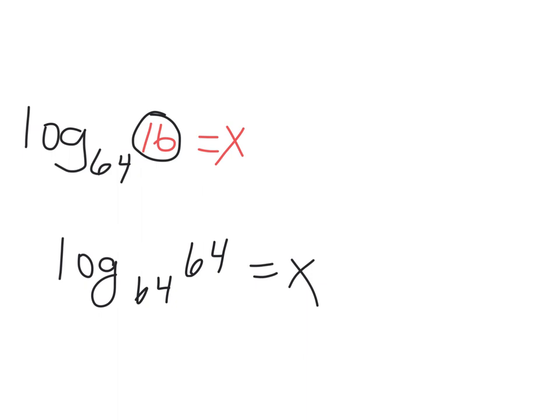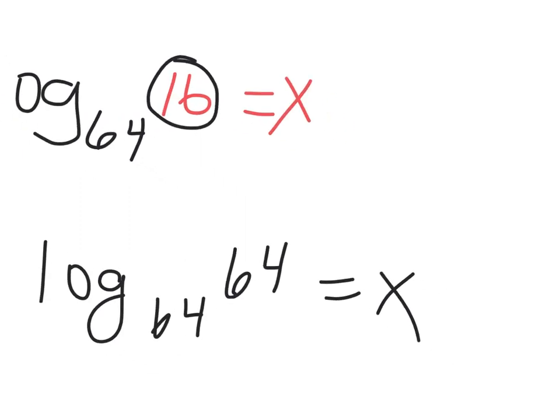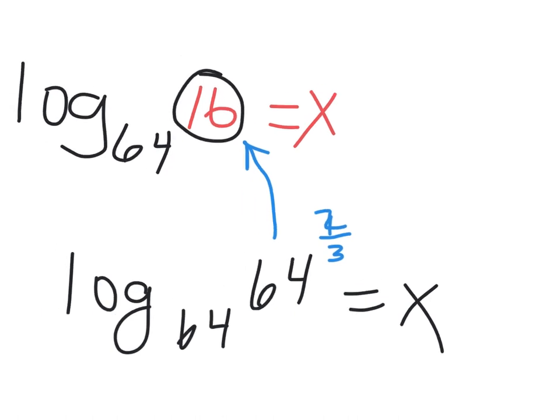Two-thirds. Now, would you have known that 16 was 64 to the two-thirds? I would have taken the third root of 64, known that brings it down to 4, and then I just gotta square the 4 to get it up to 16 — that's why it's two-thirds. So you have two choices on your test: you can do it with logs, or you can do it with making the bases the same.